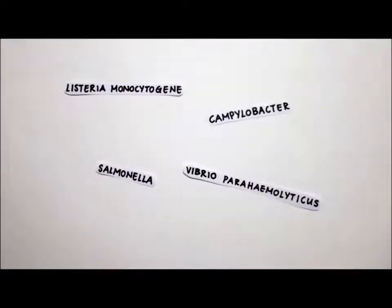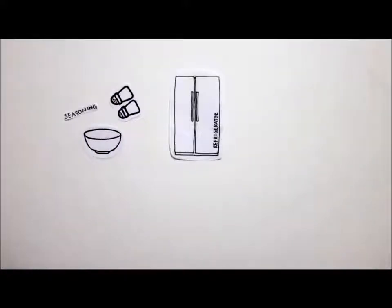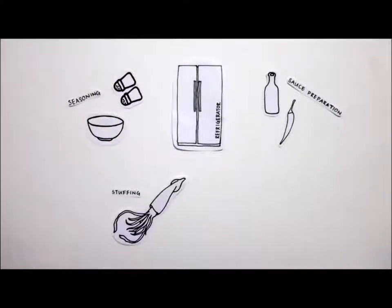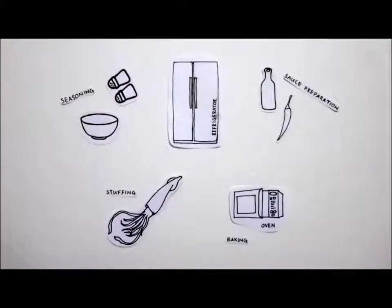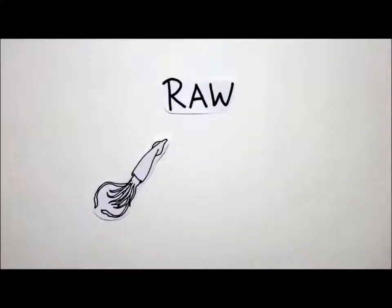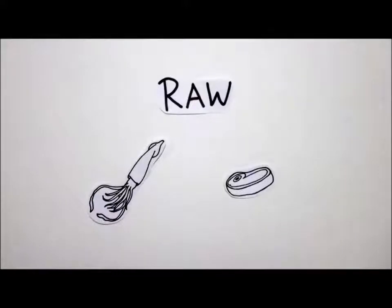For our dish, there are five steps in our food process: seasoning, refrigeration of the seasoned pork, sauce preparation, stuffing of the squid, and baking of the final dish. Our main concern is the raw pork and raw squid, as these ingredients are vulnerable to microbial growth.